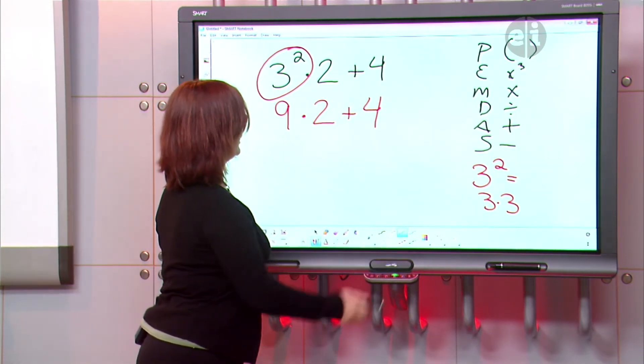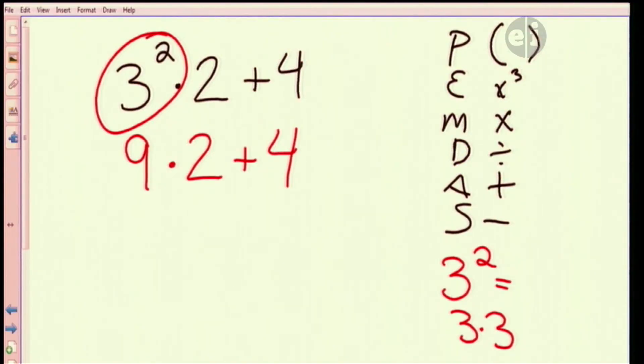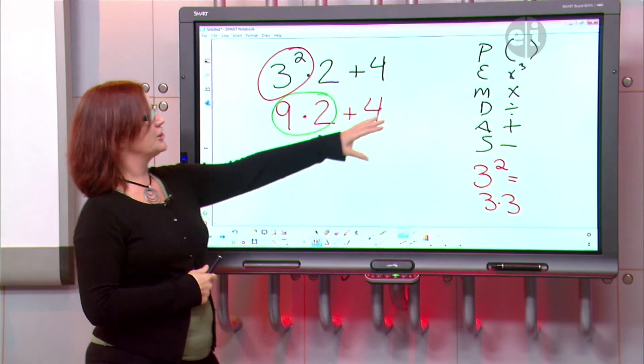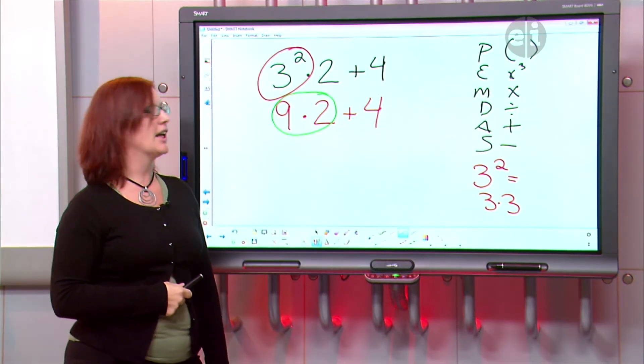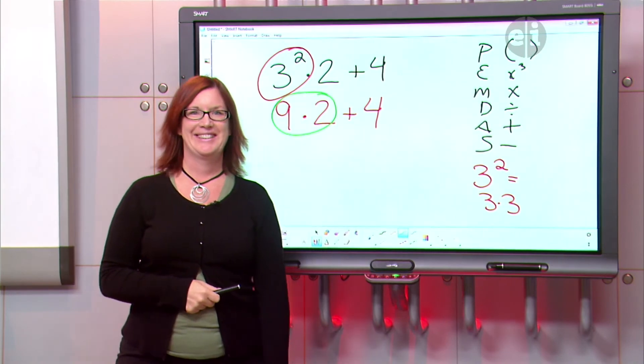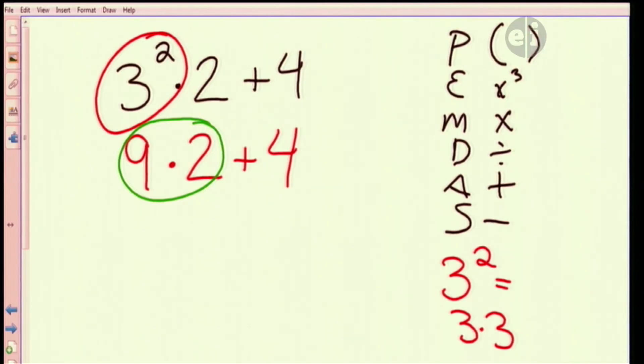There is multiplication, and where is that? Nine times two. Nine times two, so we're gonna do this piece next. Okay. Yeah. I'm not doing it because it's first, it's because the order of operations tell me to. Multiplication division. And what is nine times two? 18. Great. So nine times two is the same thing as 18.